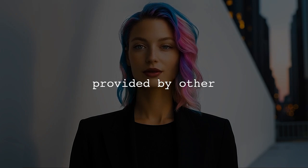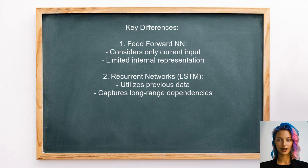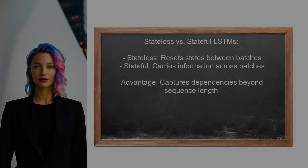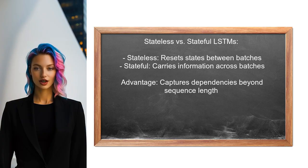Now, let's look at the answers provided by other users. This user highlights the key difference between a feed-forward neural network and recurrent networks like LSTMs. They explain that while a feed-forward network with a sliding window only considers the current input, LSTMs utilize information from previous inputs due to their recurrent connections. They also clarify the concept of stateless versus stateful LSTMs — in stateless mode, states reset between batches, allowing some information to carry over beyond the sequence length, which a regular feed-forward network cannot achieve.